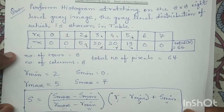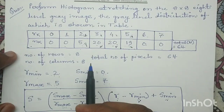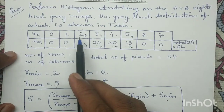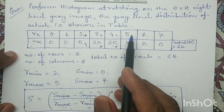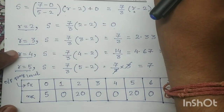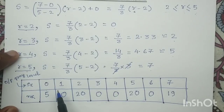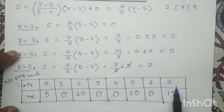In the input histogram, the histogram lies between the minimum gray level of 2 and the maximum gray level of 5. After performing histogram stretching, the output histogram now has a minimum gray level of 0 and a maximum gray level of 7. Hence, we have successfully performed histogram stretching.